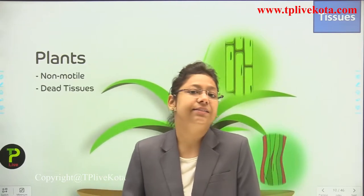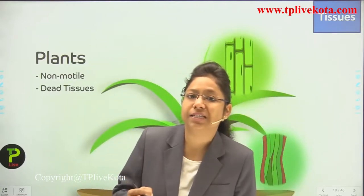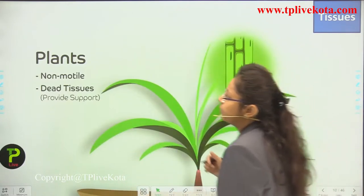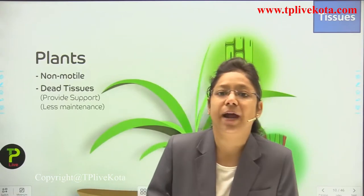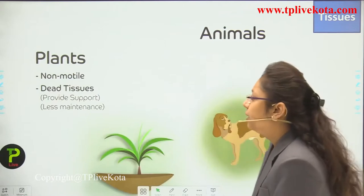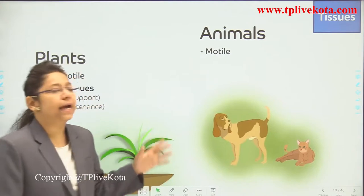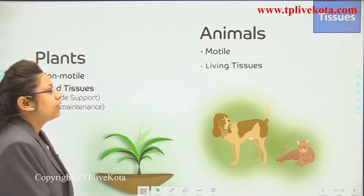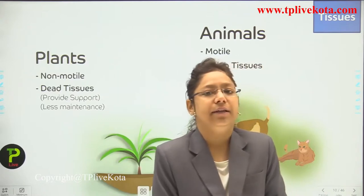Plants are non-motile, so they constitute mostly non-living, dead tissues. Dead tissues provide mechanical support to the plant and require less maintenance. Animals are motile — they show locomotion and movement, so they comprise living tissues. Animals also have a proper skeletal system for support, which plants do not have.